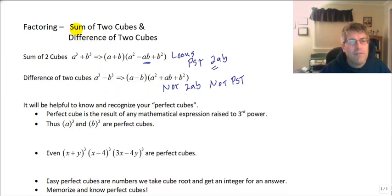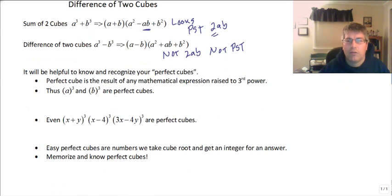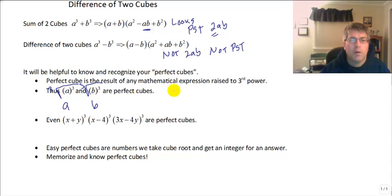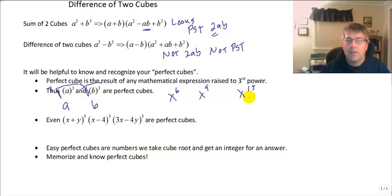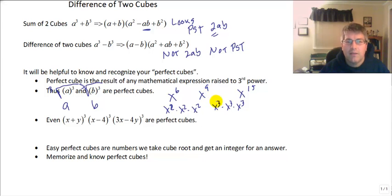It will be helpful when factoring sum and difference of cubes to recognize your perfect cubes. A perfect cube is the result of any mathematical expression raised to the third power — anything multiplied three times in a row. So we can take the cube root of a cubed and get a, and the cube root of b cubed and get b. Any exponent that is a multiple of three is a perfect cube, like x to the sixth, x to the ninth, or x to the fifteenth.